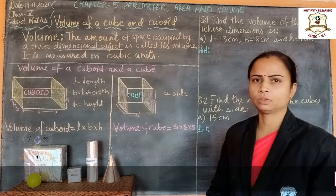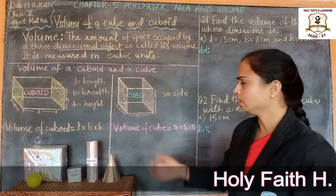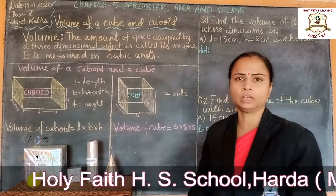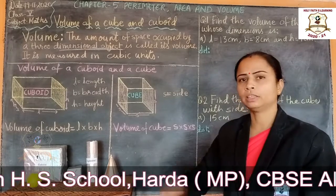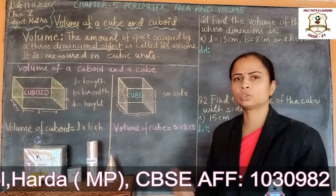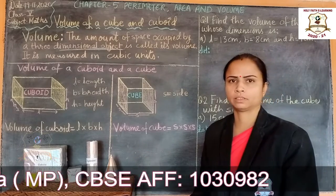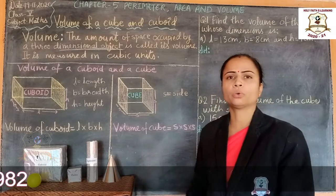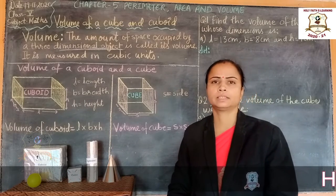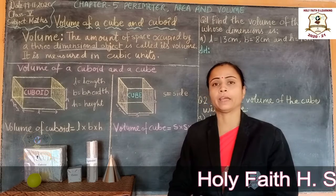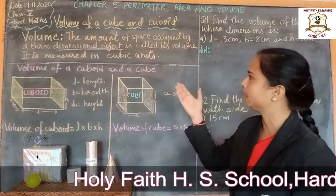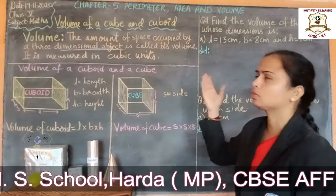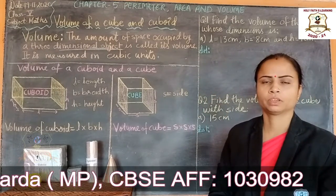All these shapes are solid objects. All three-dimensional objects are solid objects. And all these objects occupy space. The amount of space occupied by a three-dimensional object is called its volume.